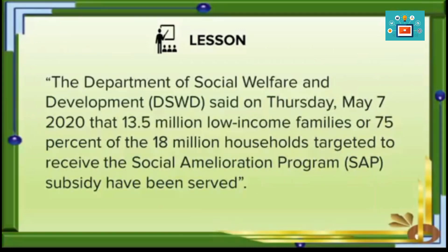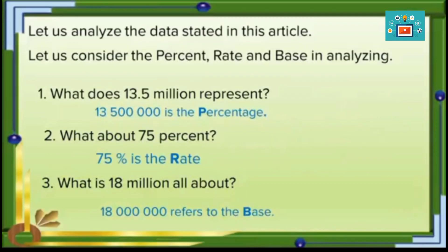Let's now proceed to our lesson. We start with this article: the Department of Social Welfare and Development (DSWD) said on Thursday, May 7, 2020, that 13.5 million low-income families, or 75% of the 18 million households targeted to receive the Social Amelioration Program (SAP) subsidy, have been served. Based on this article, let us analyze the data — consider the percent rate and the base. Question one: what does 13.5 million represent?